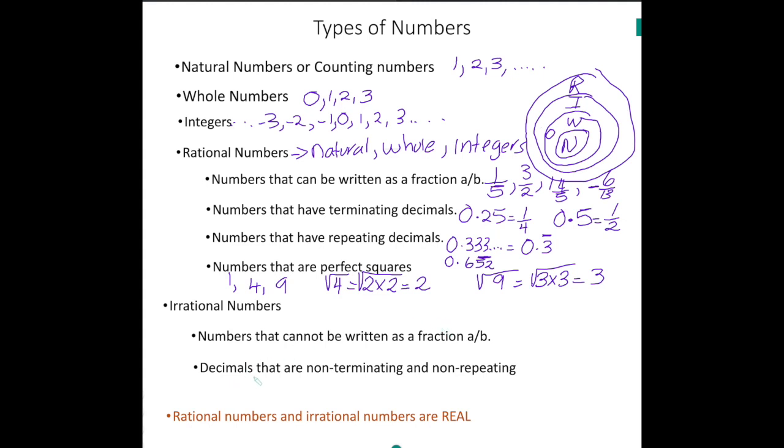Irrational numbers are decimals that are non-terminating, which means they don't end. An example of that would be pi. The value of pi is 3.141592, and it keeps going. So pi is what I usually tell my students is the most famous irrational number.